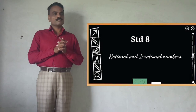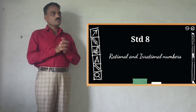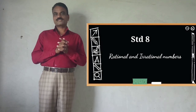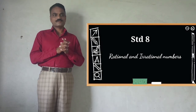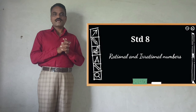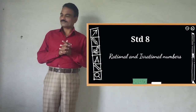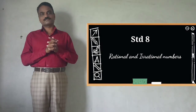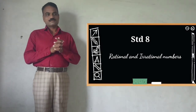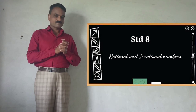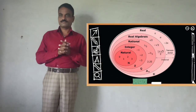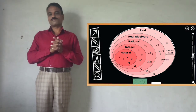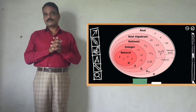Now, here we see the first chapter of standard 8: rational and irrational numbers. We are familiar with various types of sets. For example, the set of natural numbers: 1, 2, 3, 4, 5, 6, 7 and so on.